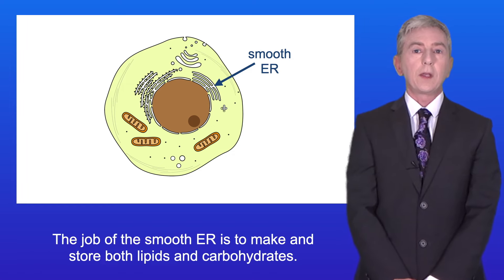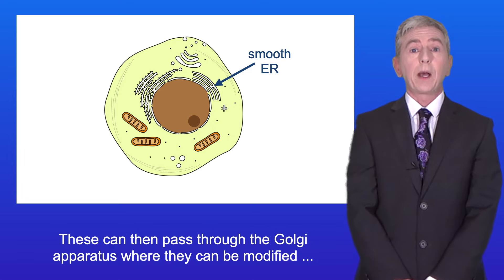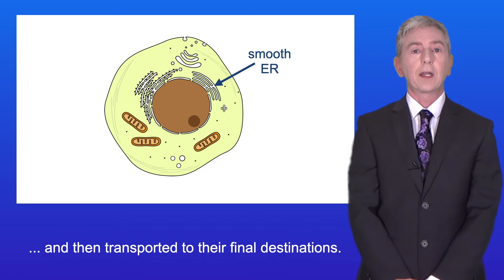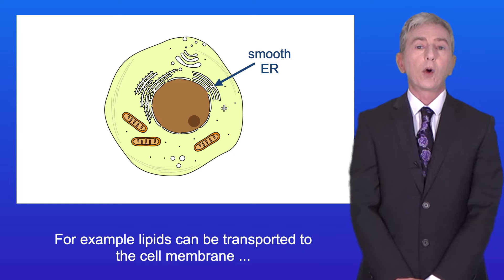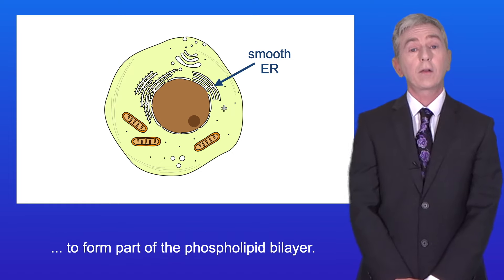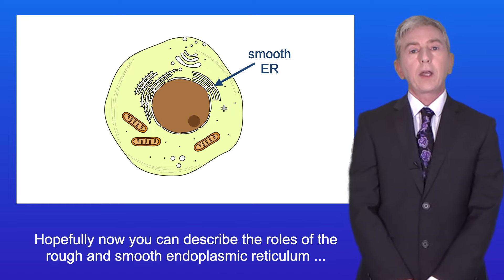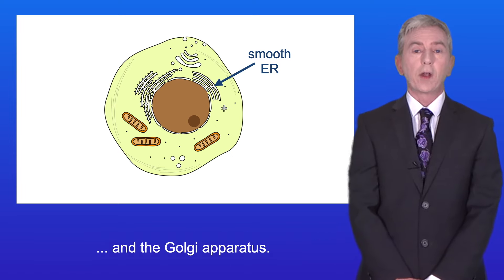The job of the smooth ER is to make and store both lipids and carbohydrates. These can then pass through the Golgi apparatus where they can be modified and transported to their final destinations — for example, lipids can be transported to the cell membrane to form part of the phospholipid bilayer. So hopefully now you can describe the roles of the rough and smooth endoplasmic reticulum and the Golgi apparatus.